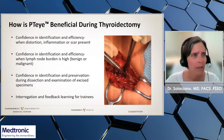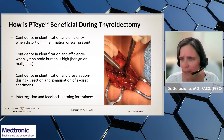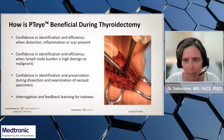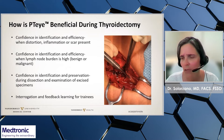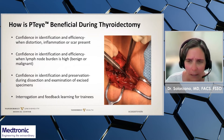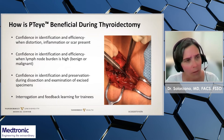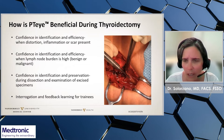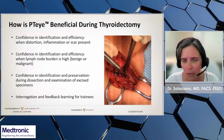So how is the PTI beneficial? It allows for confidence in identification and efficiency with distorted anatomy, inflammation, or scar present. It allows for confidence in identification and efficiency when lymph node burden is high, and confidence in identification and preservation during dissection and examination of excised specimens. It also allows for frequent interrogation of tissue and feedback for the learner.